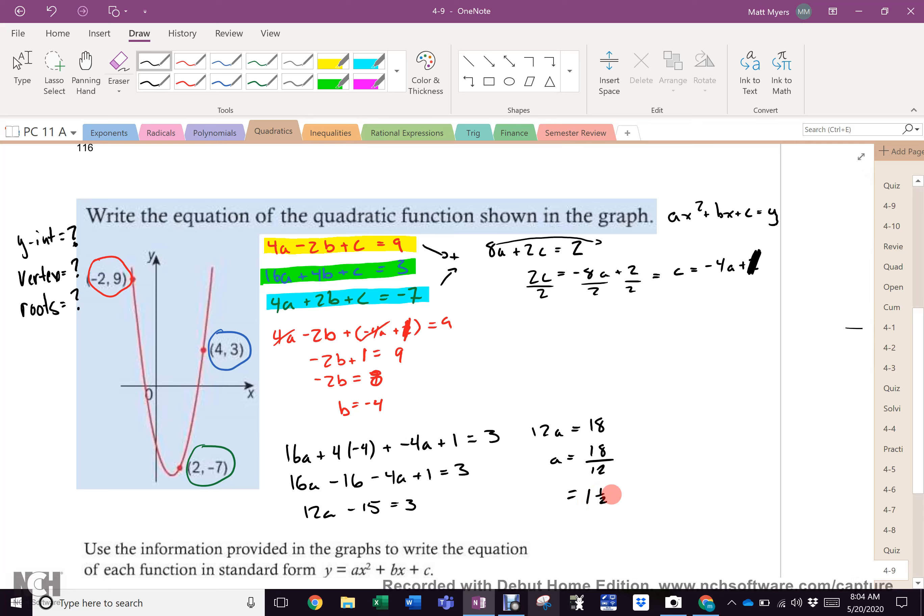So, now I know a is right there. Now, I know b is right there. The only thing I don't know is c, because c equals -4a + 1. But, I know a is 1 and a half. So, c equals -4 times 1.5 + 1. c equals -6 + 1. c equals -5. So, here's my equation.